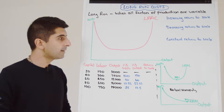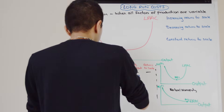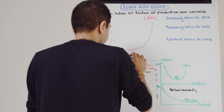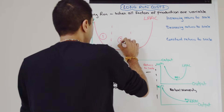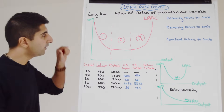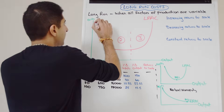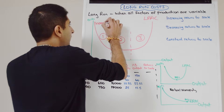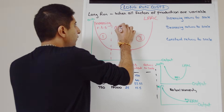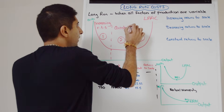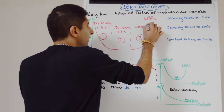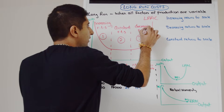We can show this more clearly by breaking the curve into three different parts. In stage one a business is benefiting from increasing returns to scale. There are constant returns to scale in the middle, and there are decreasing returns to scale in stage three.